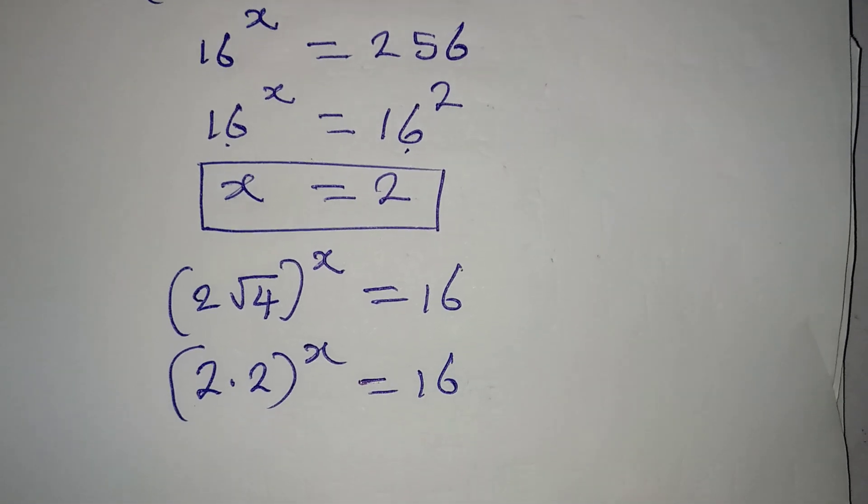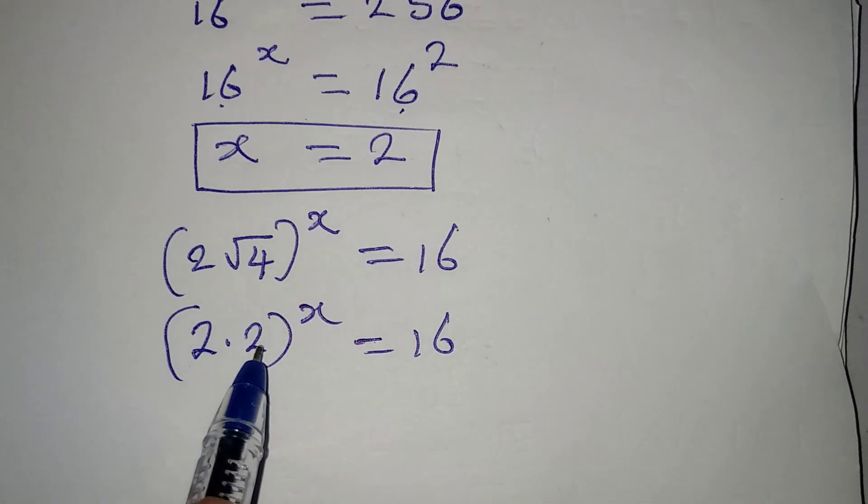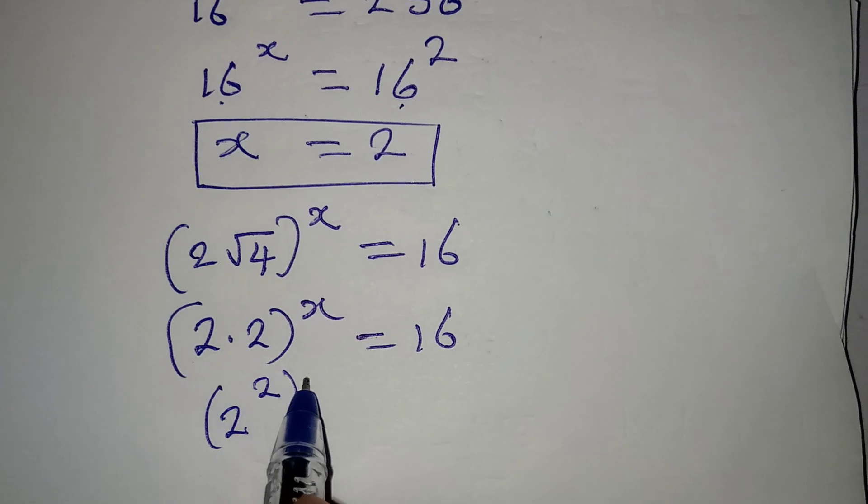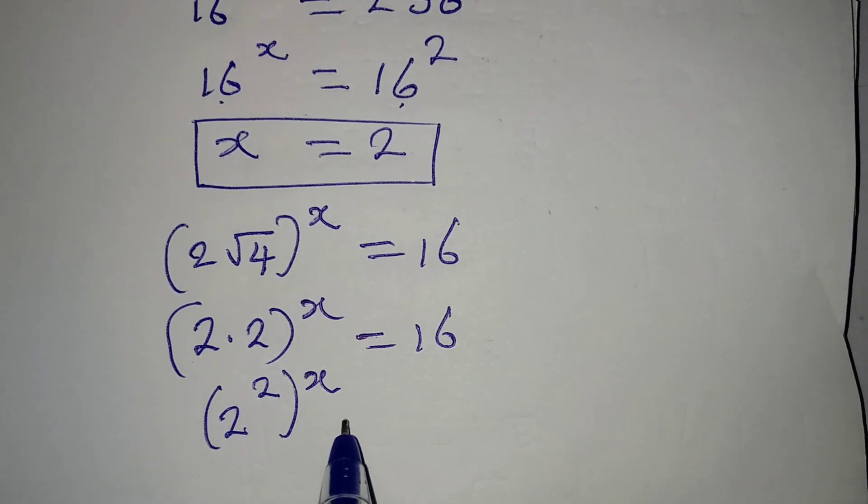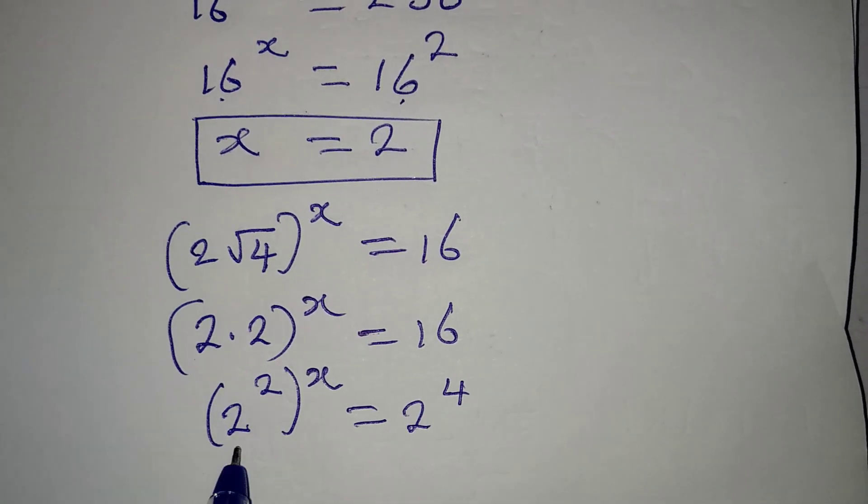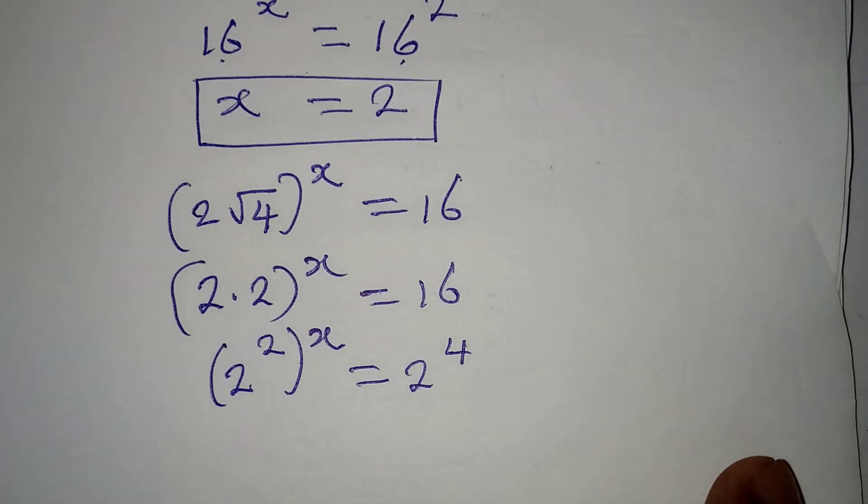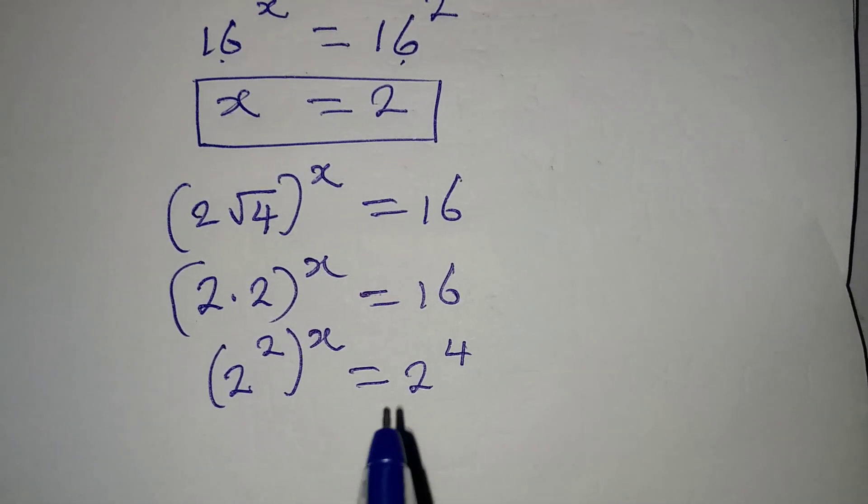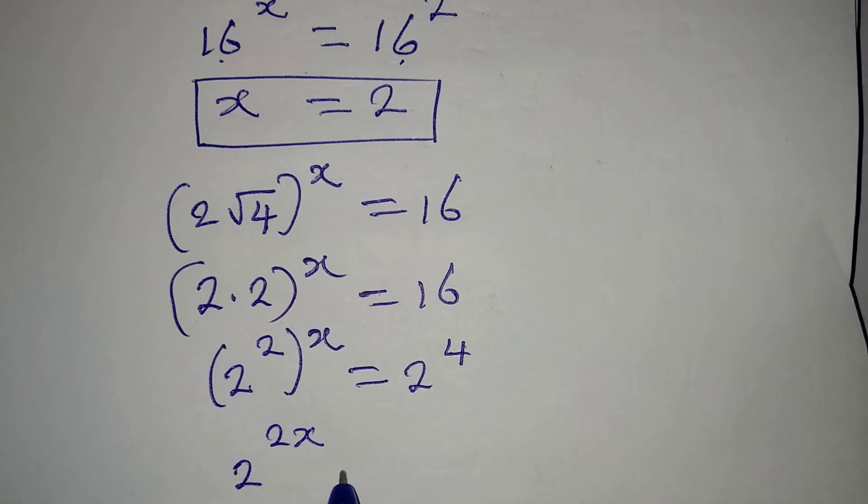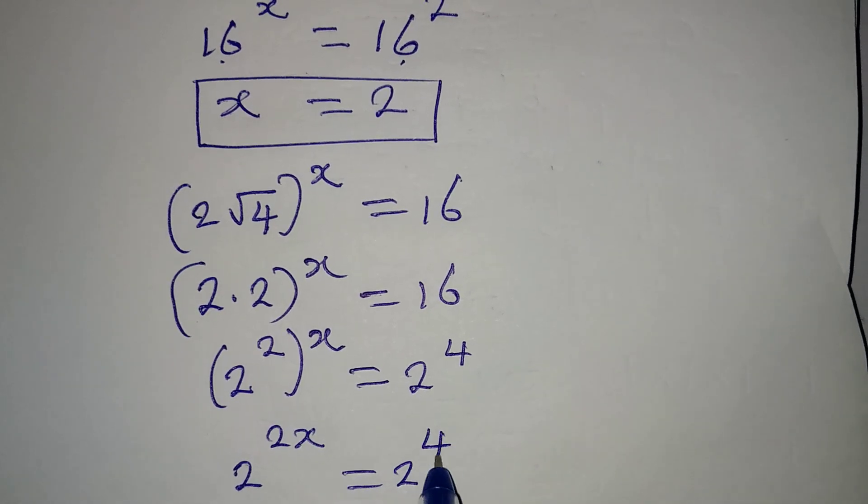This will be equal to 16. Here, 2 times 2 is 2 to the power of 2, and then x outside will still appear. This equals 16, which is 2 to the power of 4. Now we have the same base, so from here we have 2^(2x) = 2^4.